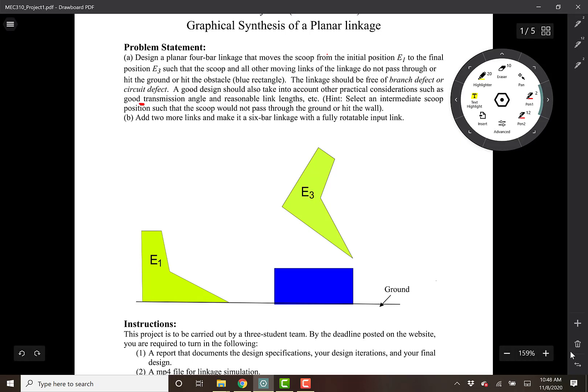There are also some task-specific constraints which say that your scoop or any part of your linkage cannot hit this blue obstacle or cannot go below the ground in this region. This means that your fixed pivots cannot be located anywhere below this horizontal line. And during motion, neither the scoop nor any one of the links should go below this ground or go into this blue obstacle.